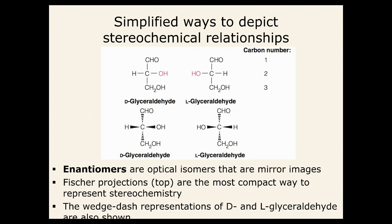Another type of designation is the absolute configuration, based on crystal structures of D-glyceraldehyde. X-ray diffraction data showed that when the OH is on one specific side of the carbon, it's given the D designation; on the other side, it's given the L designation. So D and L is an absolute configuration based on empirical experimental data collected regarding that molecule.